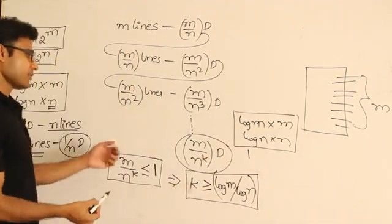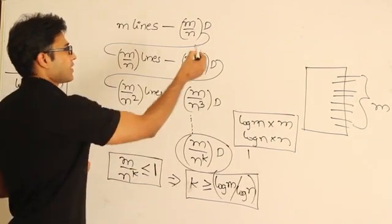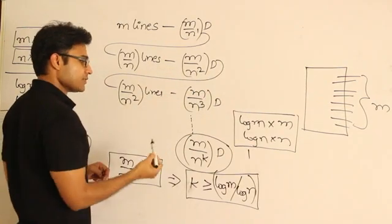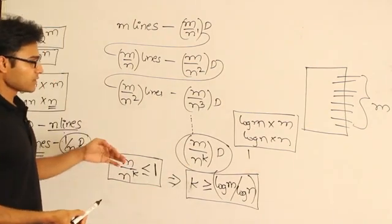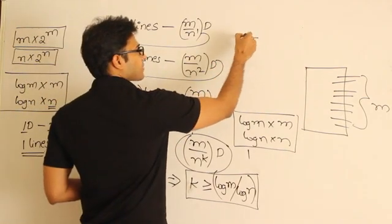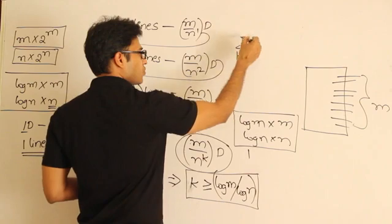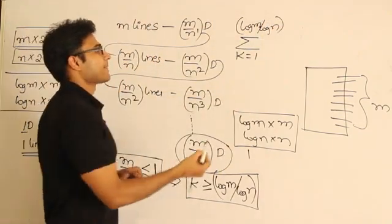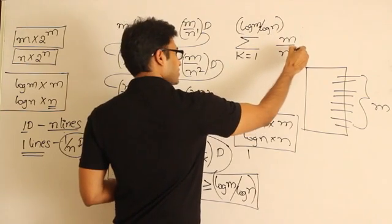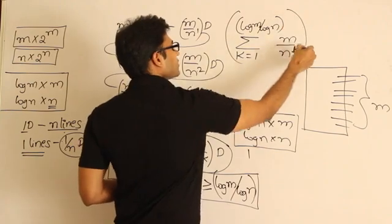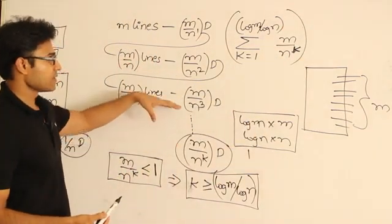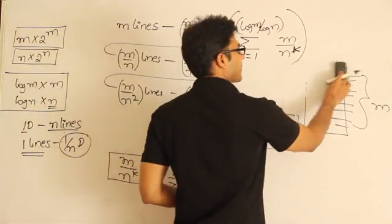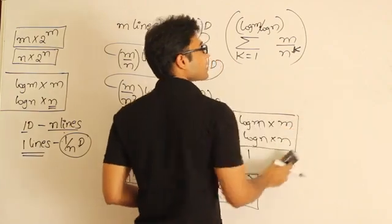At level 1 the number of decoders required is m/n¹; at level 2 it is m/n²; at level 3 it is m/n³; and at level k it is m/nᵏ. The total number of levels required is k = ceil(log(m) / log(n)). The total number of decoders required is the sum from level 1 to k of m/nᵏ.